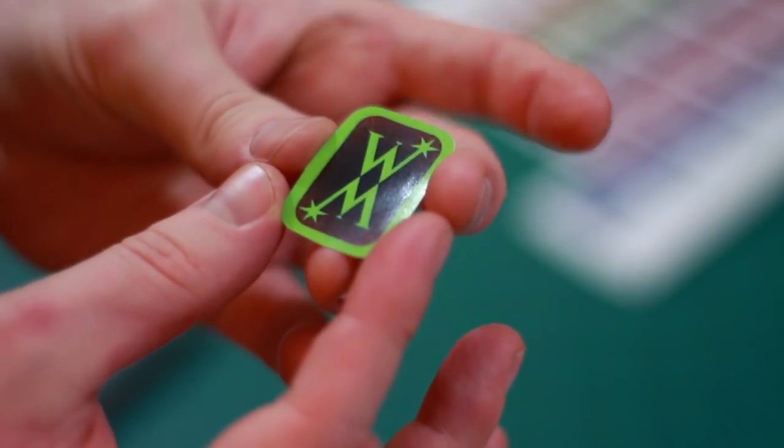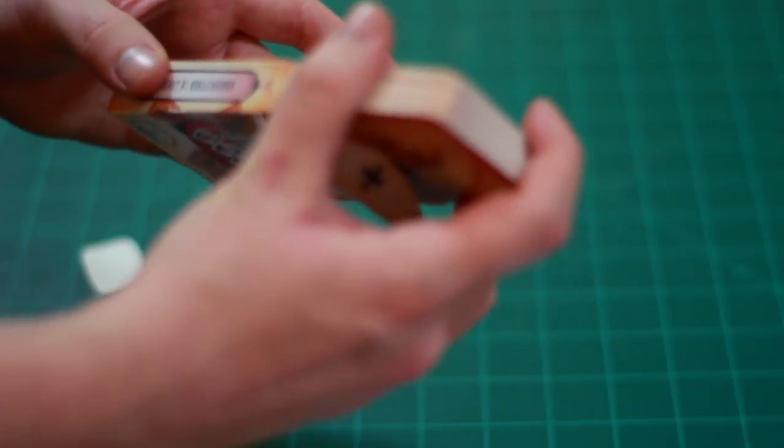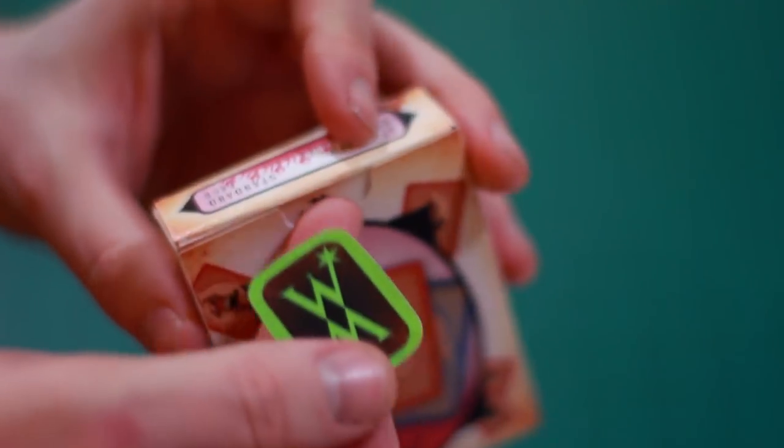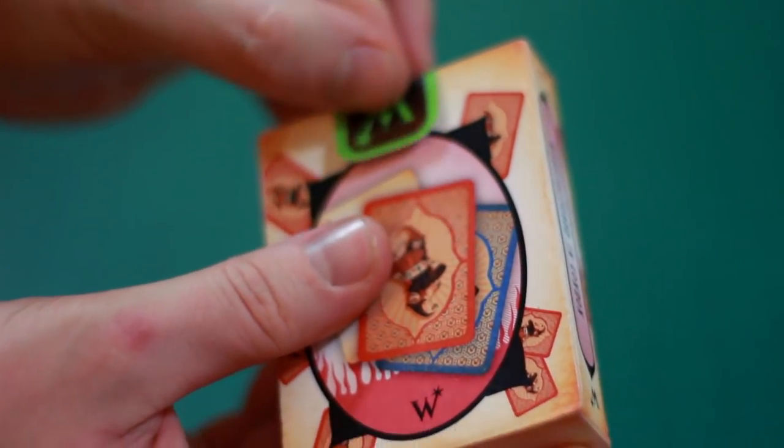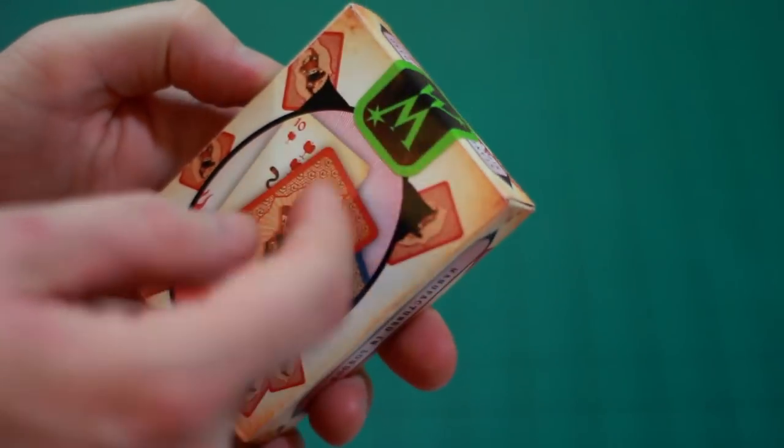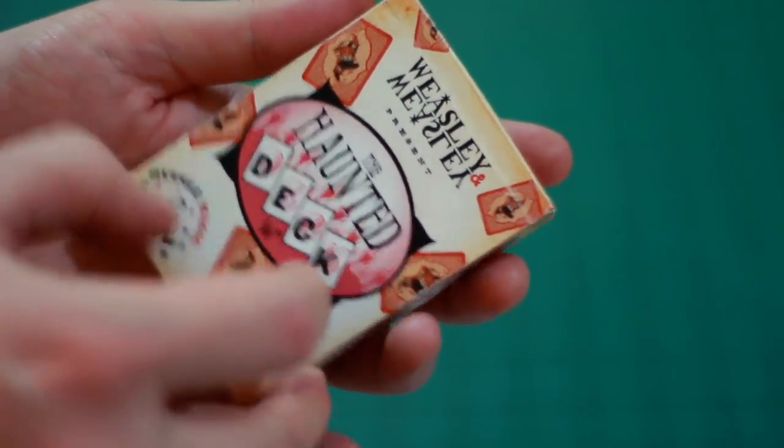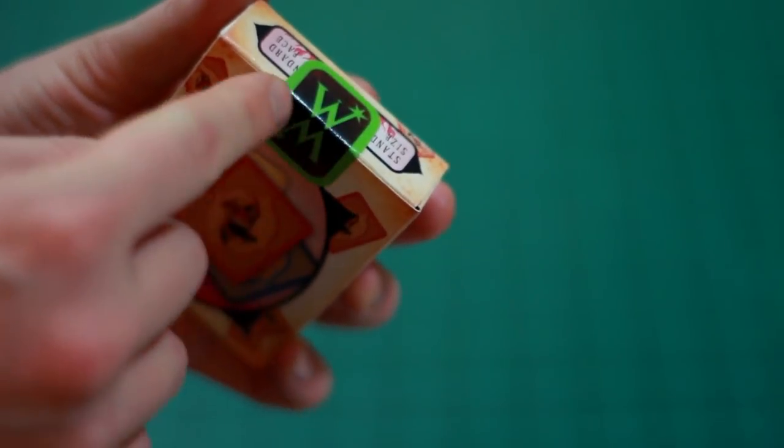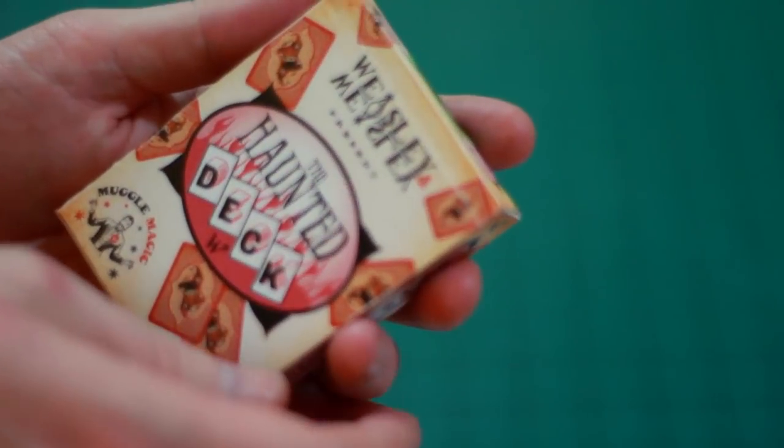So the sticker should end up looking like this. So now we can take our deck of cards, put it back into the box, and then take your Weasley Wizard Wheezes sticker and line it up. Now we have sealed our box with the Weasley Wizard Wheezes sticker. So this is what the deck would look like if it were for sale somewhere. You would get it. It would have the sticker on it. You just make a little slit right here to open it up. And yeah, that's about it.